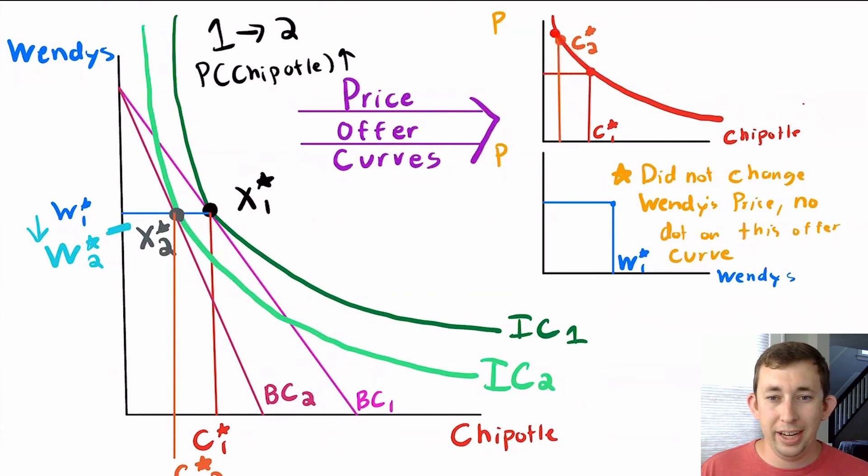How do we get this nice smooth curve? Well, you can think about it as if I've taken this budget constraint and tried infinitely many different prices for Chipotle. I've got some budget constraints that are really flat, where Chipotle is really cheap.